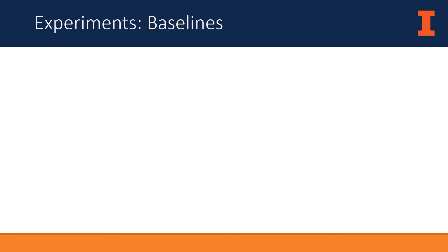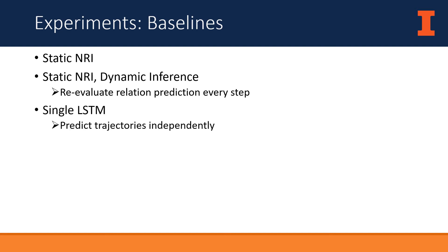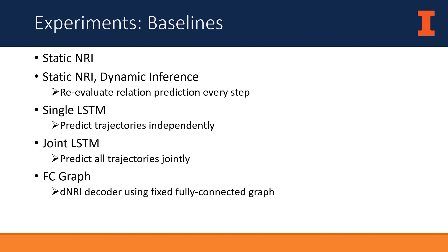I will now present experimental results covering several data domains. For each set of experiments, we compare DNRI against the following baselines: a static NRI model evaluated two ways—first predicting relations from the input for all forecasting steps, and second re-evaluating relations using the most recent trajectory predictions at each step. We also compare against an LSTM predicting trajectories independently, an LSTM predicting all trajectories jointly, and a graph neural network equivalent to the DNRI decoder but with one set of parameters and a fully connected graph.